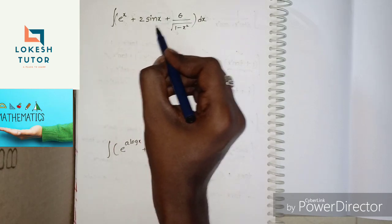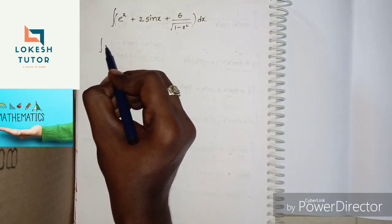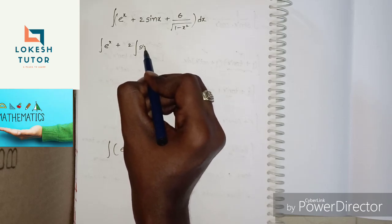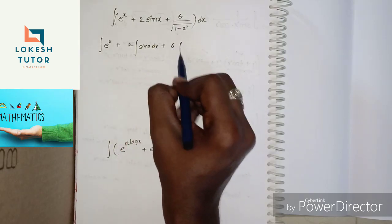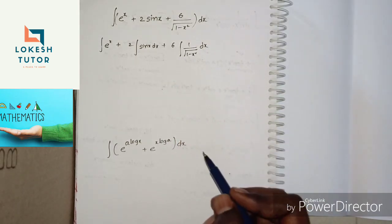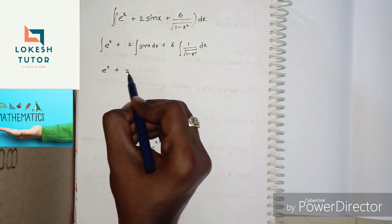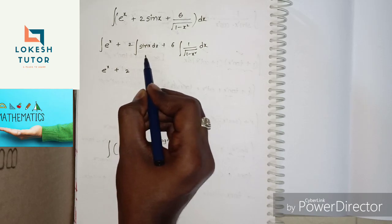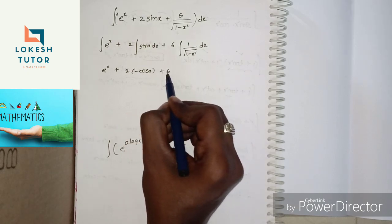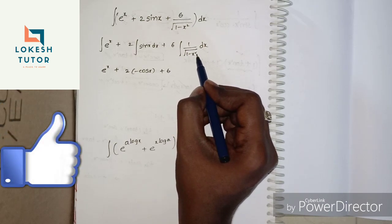Last question: Integral of (eˣ + 2 sin x + 6/√(1 − x²)) dx. Split into separate integrals: integral eˣ dx + 2·integral sin x dx + 6·integral 1/√(1 − x²) dx. Using standard formulas: integral eˣ = eˣ, integral sin x = −cos x, and integral 1/√(1 − x²) = sin⁻¹x. Final answer: eˣ − 2cos x + 6·sin⁻¹x + C.